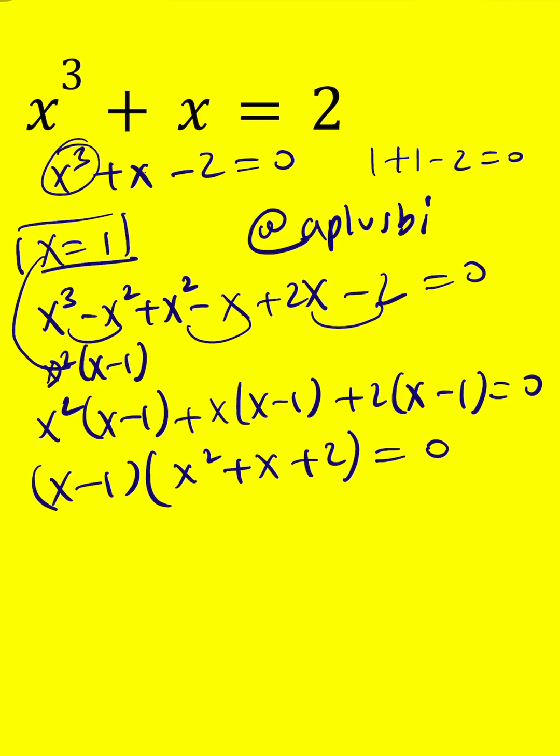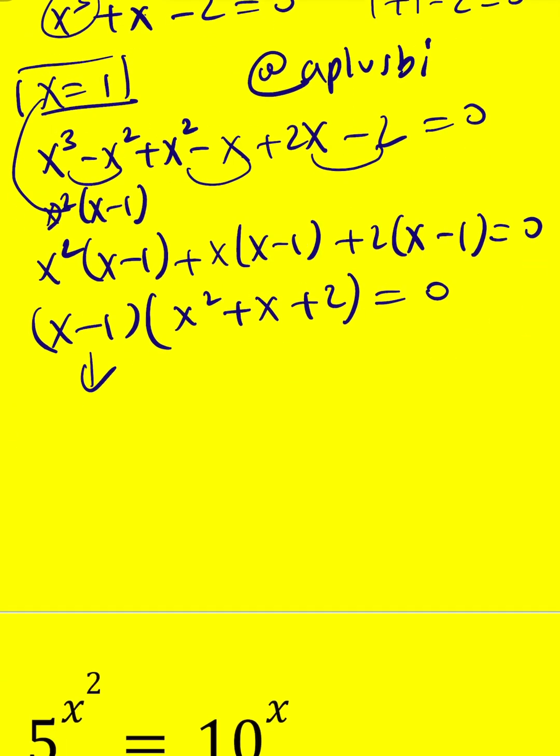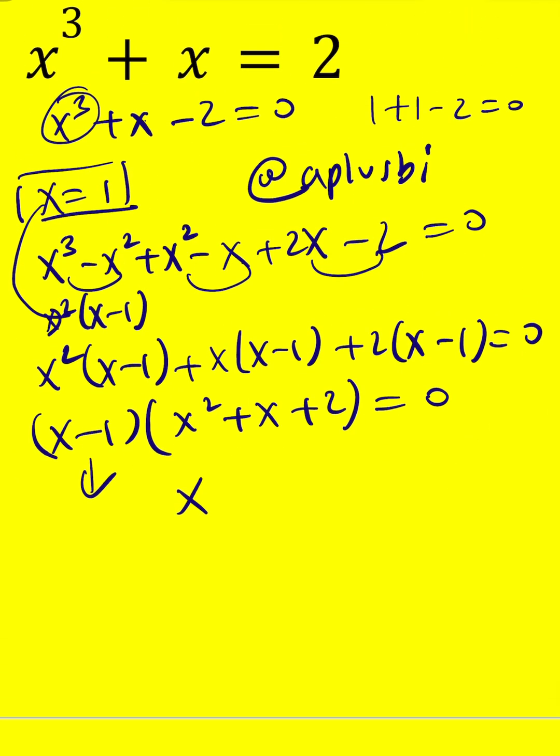So from here by using the quadratic formula, you can basically write this as negative b plus minus the square root of b squared minus 4ac. That's like 1 minus 8, which is square root of negative 7, but that needs to be written as square root of 7i divided by 2, which will give you the complex solutions.